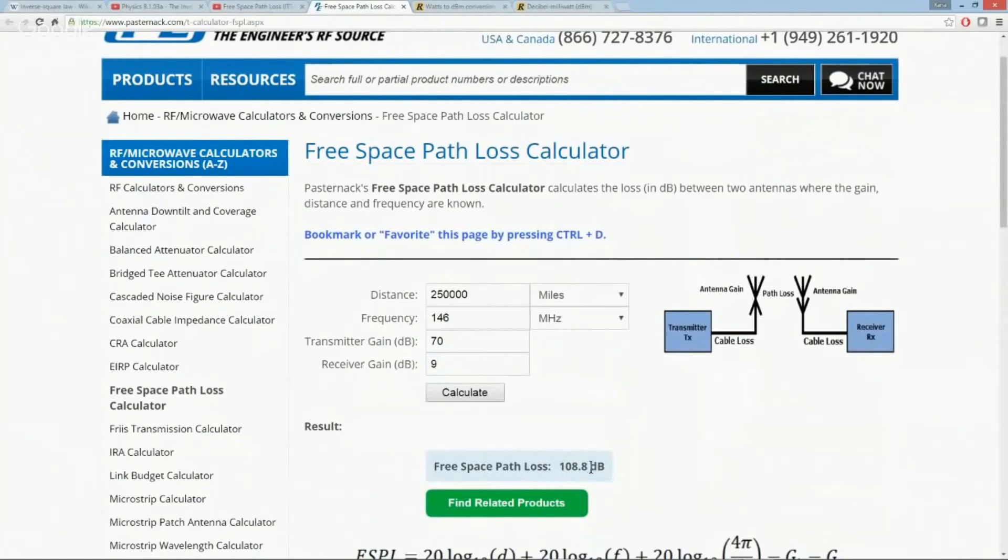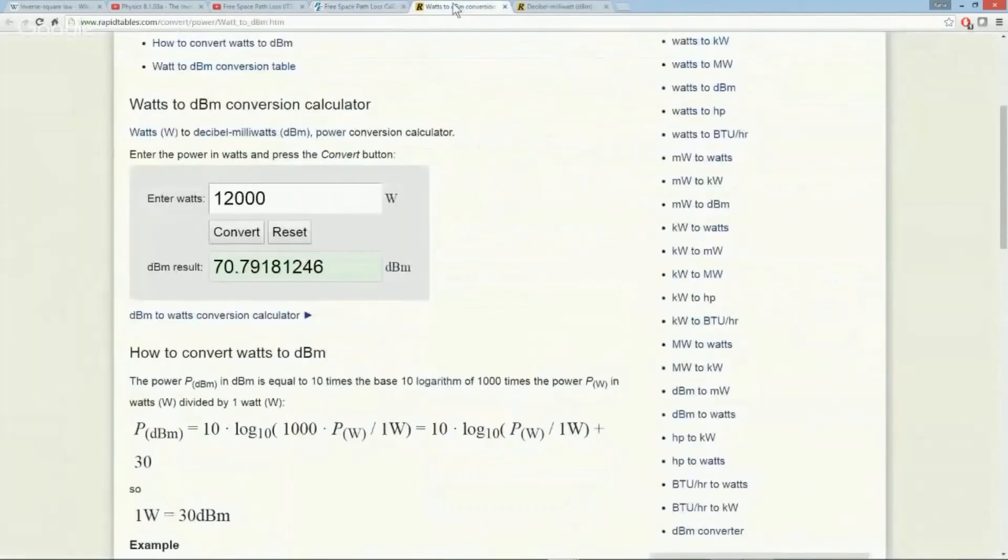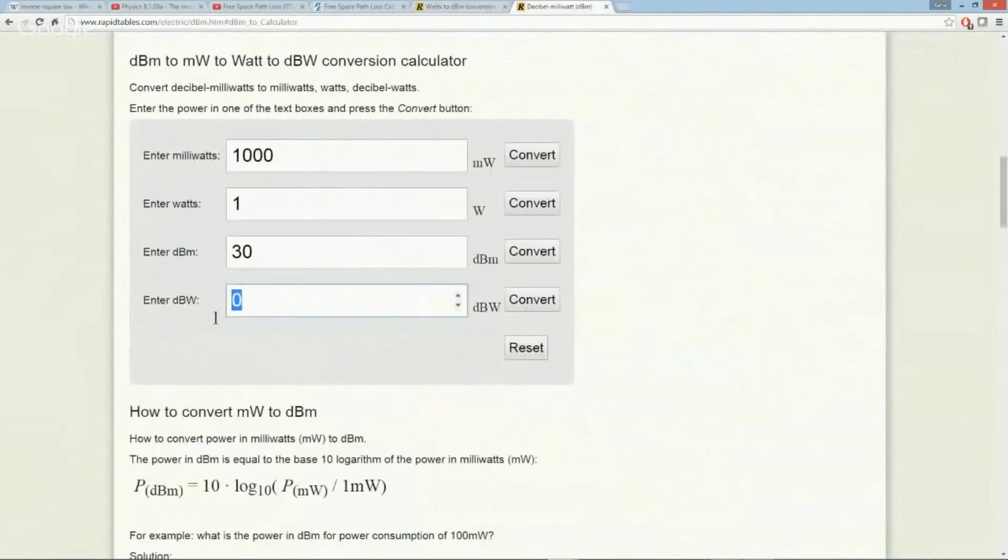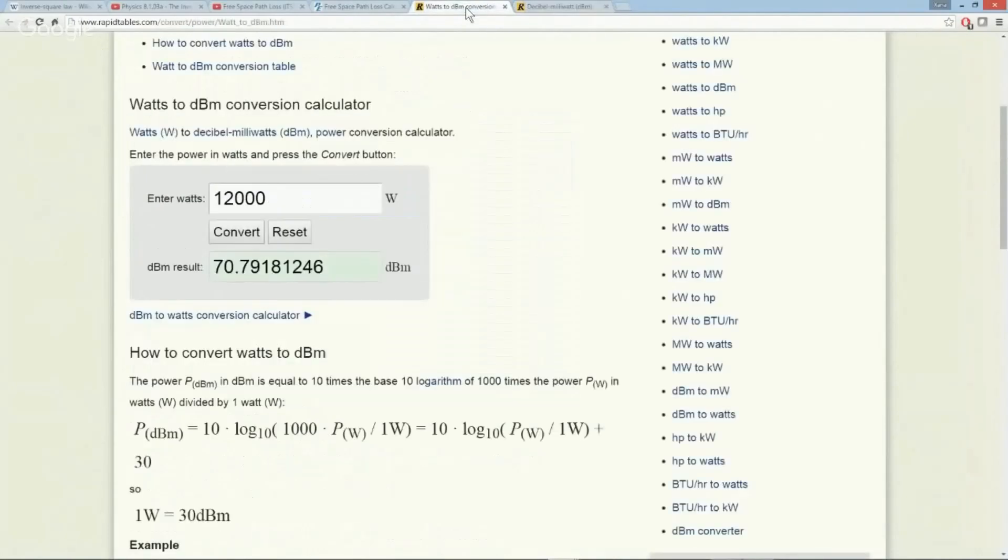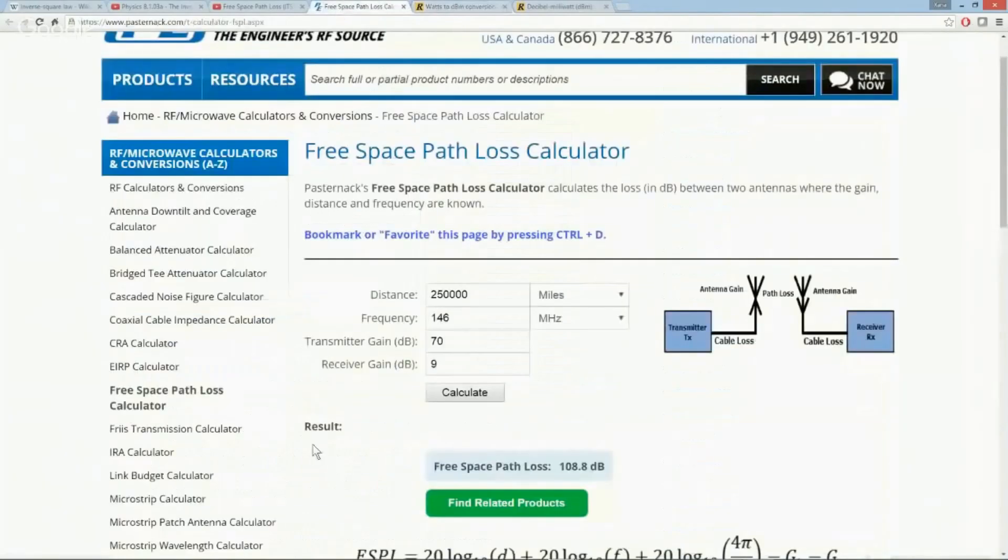Let's go back to this transmitter gain: 70 dB. Receiver gain, let's give it that same 9 dB. Calculate it. Free space path loss is 108 decibels. So what does that mean? That means to overcome this 108 dB loss of power, now we have to go to dBW and let's put in 108, convert it. That means that we have to have a transmit power—and you can see this is a big number—63 billion, 95 million, 734,000, 448 watts, just to overcome the path loss. Do you see a problem here? And this is only going one way to the moon.